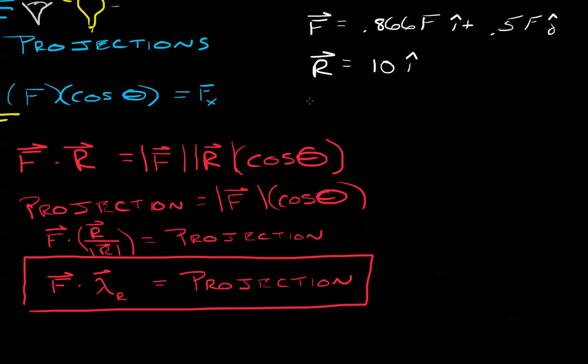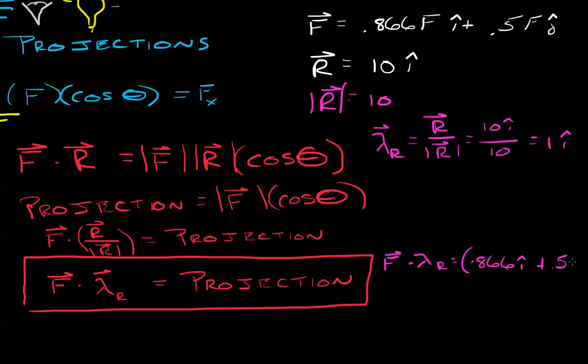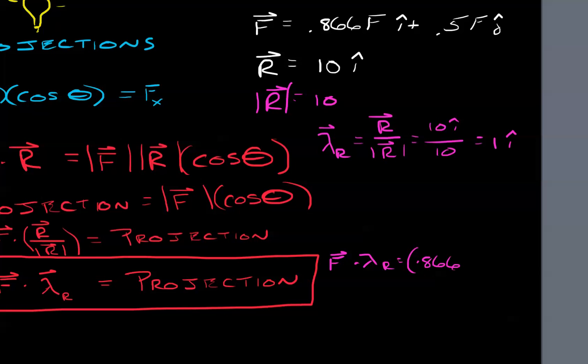Let's find the unit vector first. We know that the magnitude of R is 10. So let's take lambda R equals R over the magnitude of R equals 10i over 10 equals 1i. Great. Now, let's take F dot lambda R. That's going to be 0.866 i plus 0.5 j. Oh sorry, let's put F in there. 0.866 F i plus 0.5 F j. And we're going to dot that with 1i.